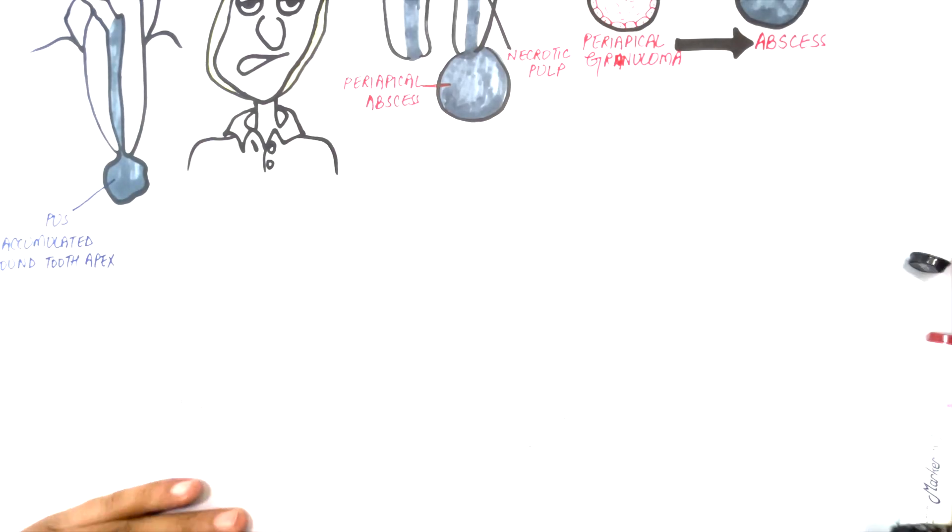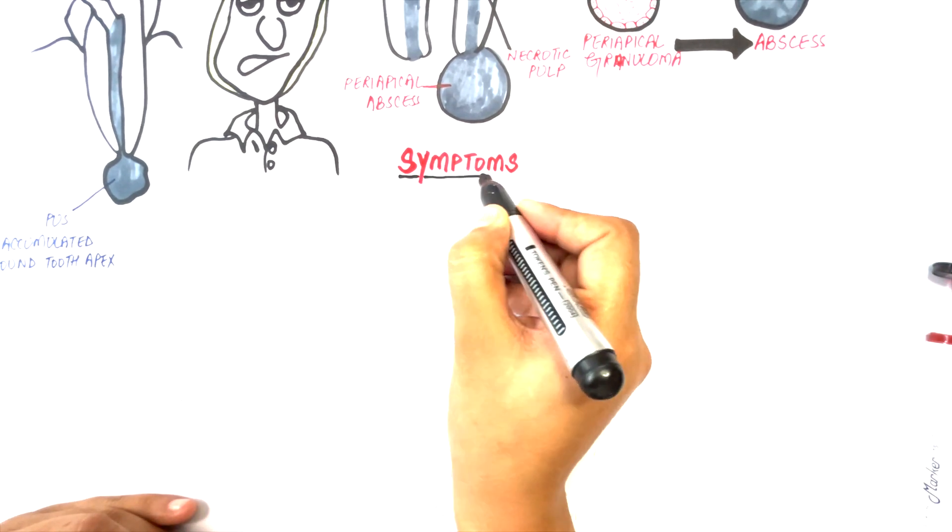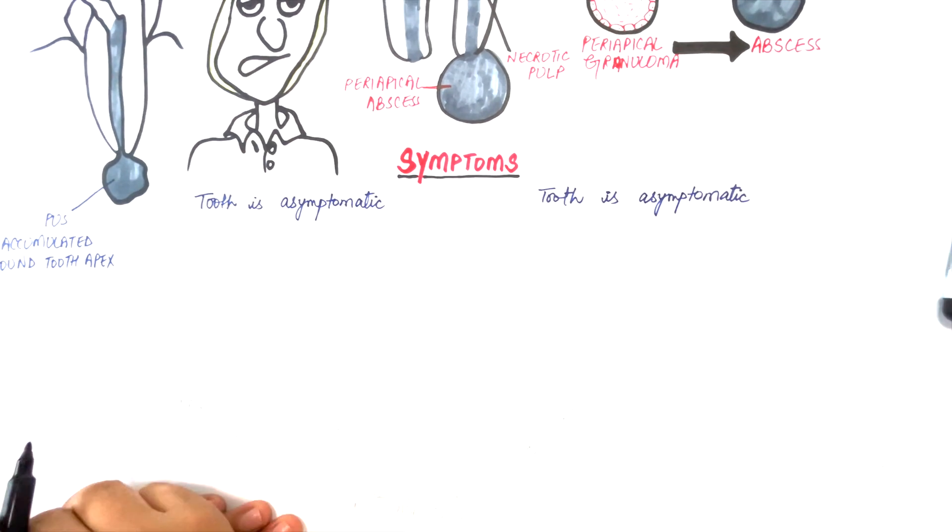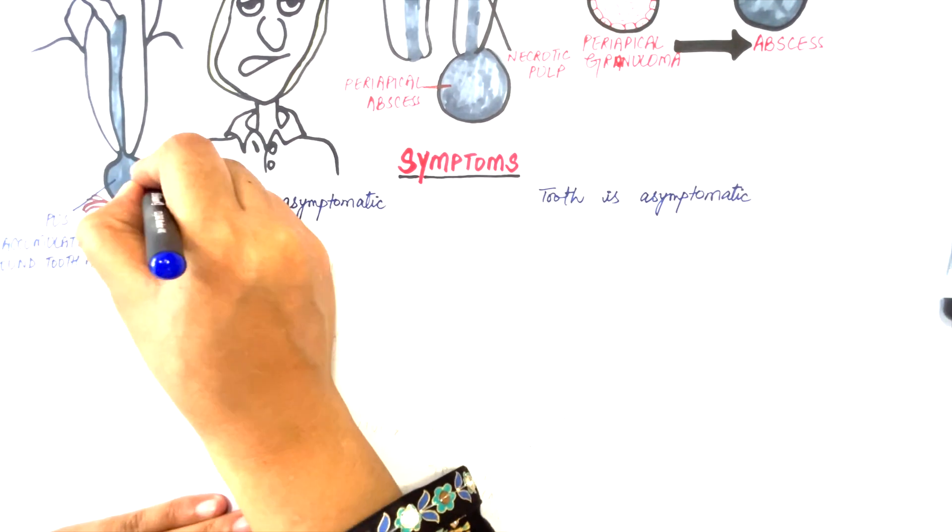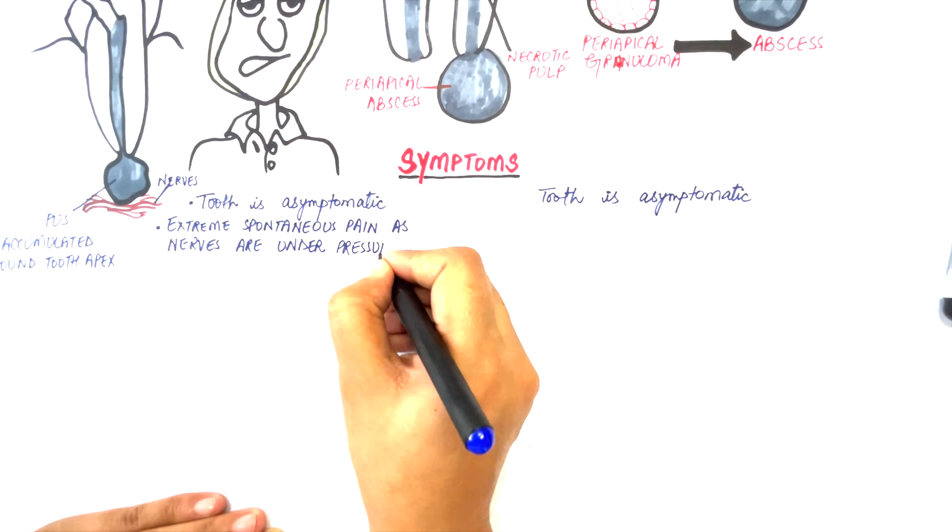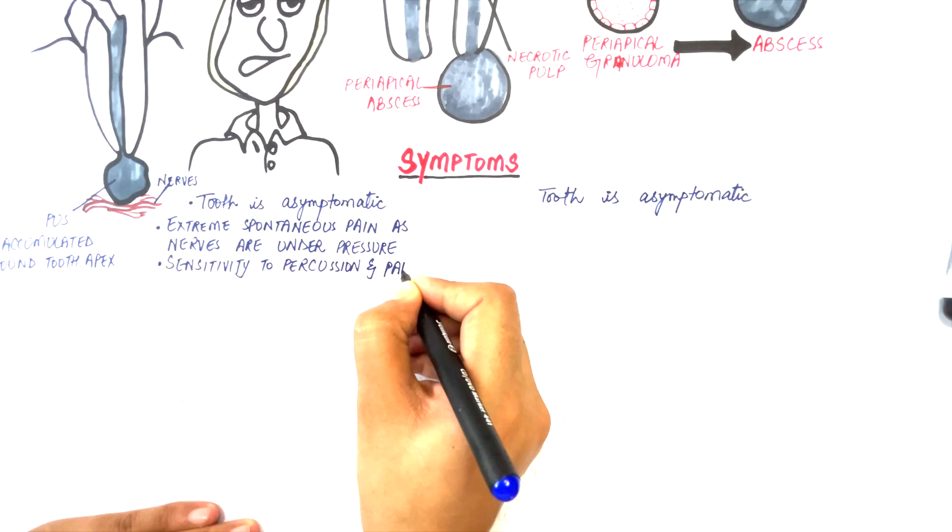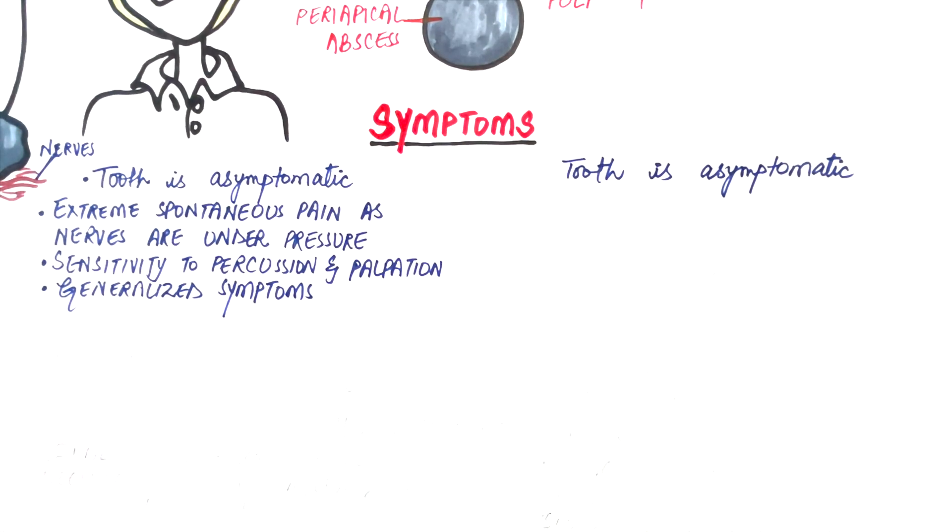In both acute and chronic types, since the pulp tissue within a tooth is necrotic, the tooth is asymptomatic. In acute periapical abscess, since the pus is accumulated in the periapical area where the nerves underlying the abscess are constantly under pressure, a patient experiences extreme spontaneous pain and the tooth is very sensitive to both percussion and palpation. Patients with acute abscess also experience generalized symptoms like elevated body temperatures and localized lymphadenitis.